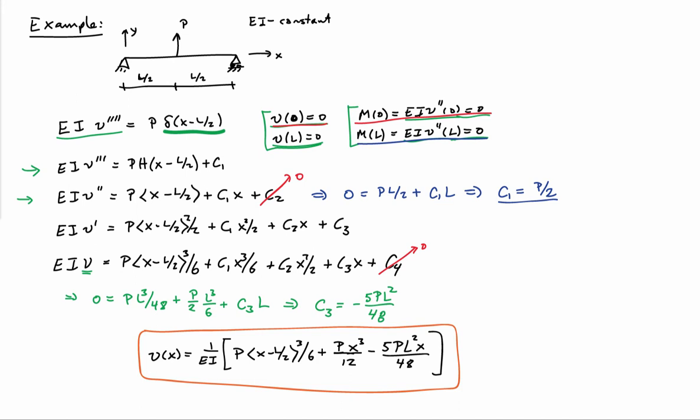And if I apply the boundary condition at x equals L for the deflection, I also find out that c3 is equal to minus 5pl squared over 48. So that's just plugging in the value x equals L into the equation for the moment and the equation for the deflection.